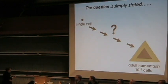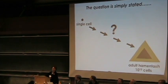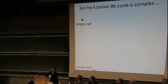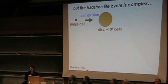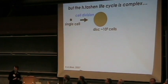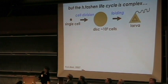With 10 to the 12th cells, give or take 10 to the 11th or so? The answer is complex. So we'll focus here. Here is our single cell that goes through its first step to form a disc — a disc of about 10 to the 12th cells.